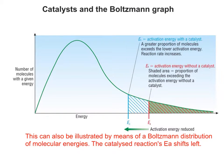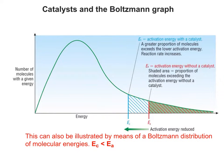We can also illustrate this using a Boltzmann graph from first-year chemistry. As you can see quite clearly, the catalyzed reaction's activation energy shifts left — in other words, EC is less than EA.